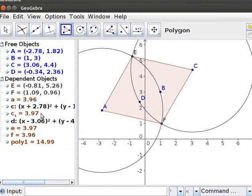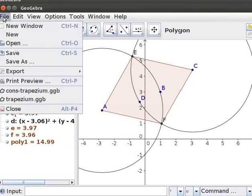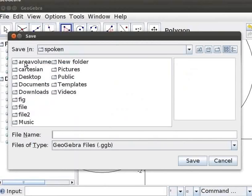Let us now save the file. Click on File, Save As. I will type the file name as Simple Quadrilateral. Click on Save.